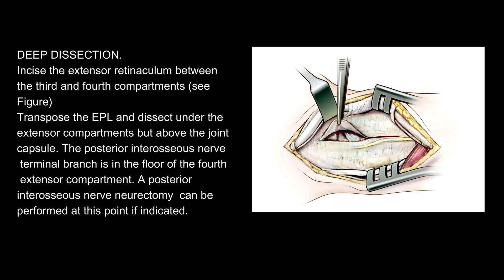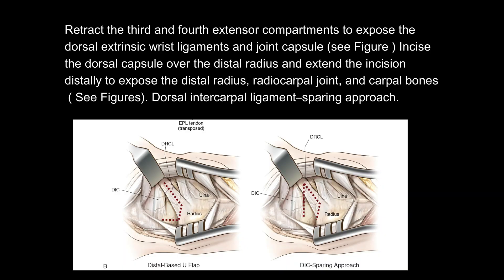The posterior interosseous nerve terminal branch is in the floor of the fourth extensor compartment. A posterior interosseous nerve neurectomy can be performed at this point if indicated. Retract the third and fourth extensor compartments to expose the dorsal extrinsic wrist ligaments and joint capsule.